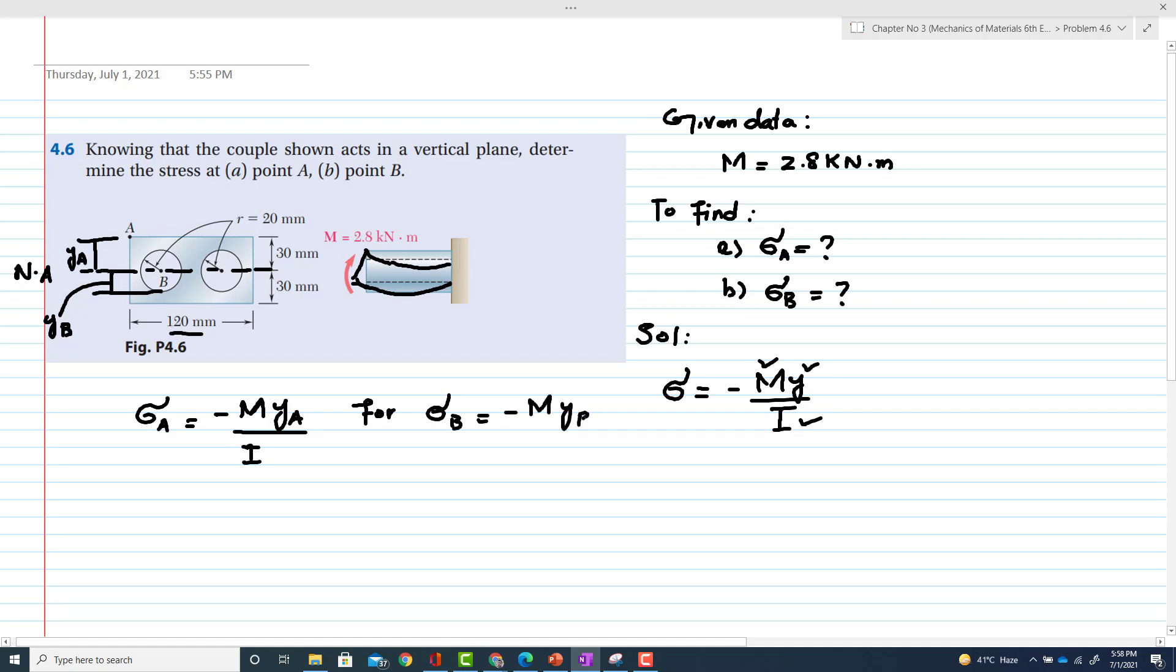Now I for this rectangular cross section: first we will find the moment of inertia for this rectangle and then subtract the moment of inertia of these two holes. That will be equal to (1/12) × 0.120 × 0.06³ minus, as there are two holes, (1/12) × 2 × (π/4) × (20)⁴.